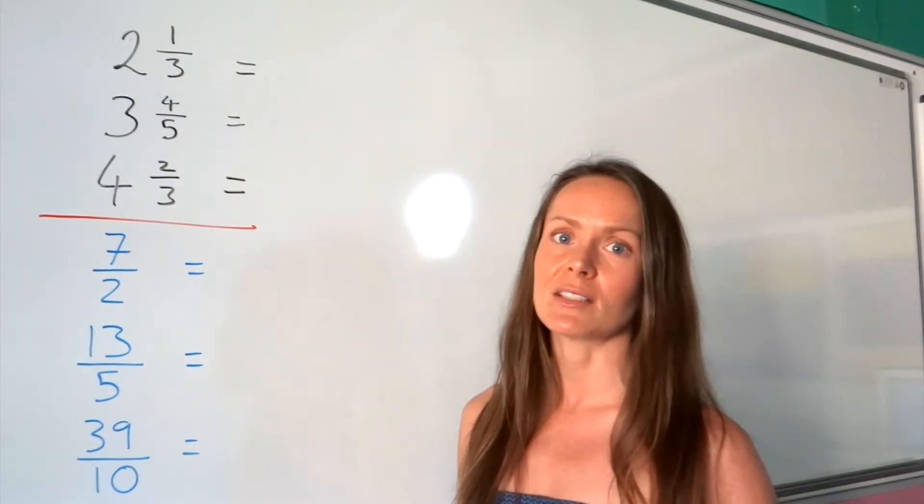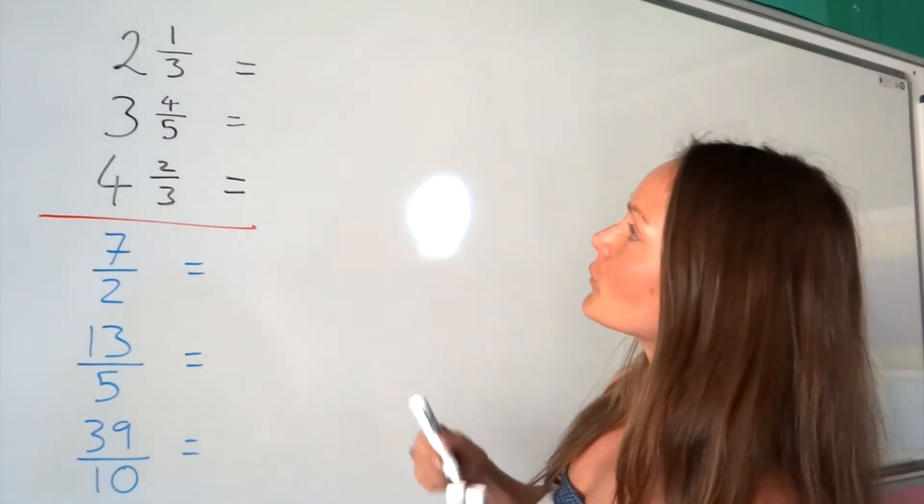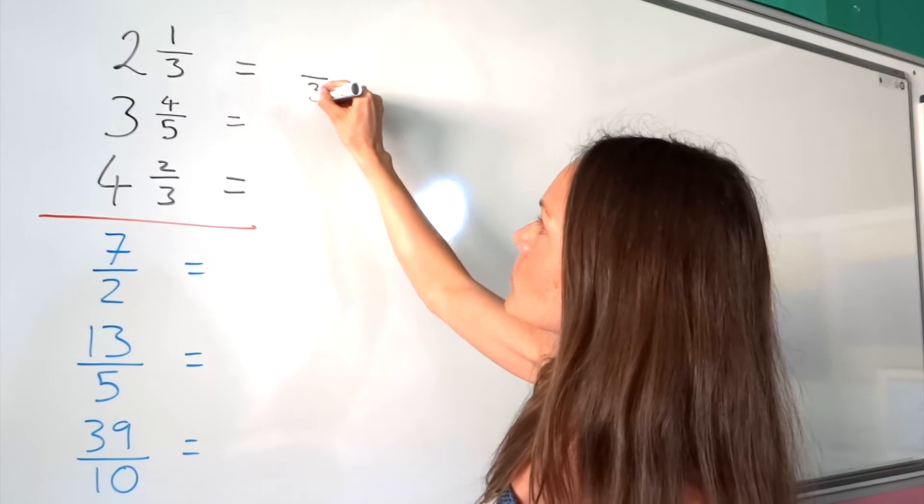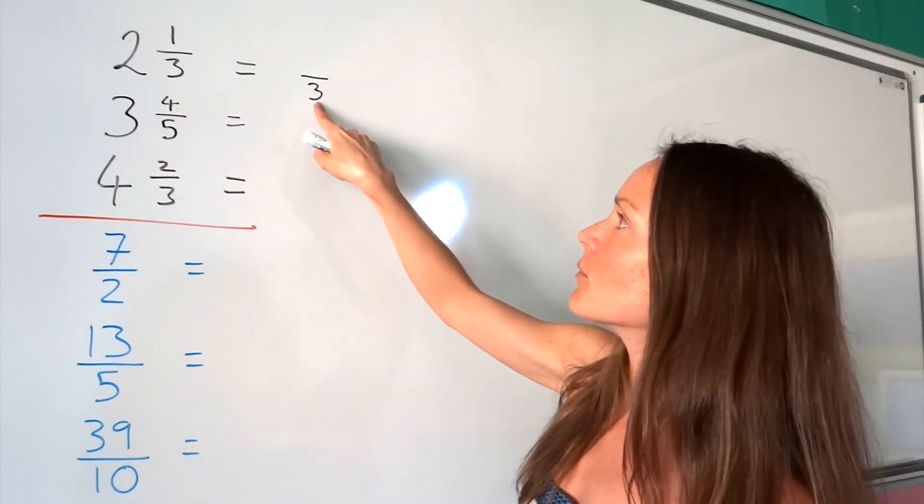Let's look at the first few examples. To find the improper fraction, the denominator part is simple—you just leave the denominator the same. So 3 and 3.